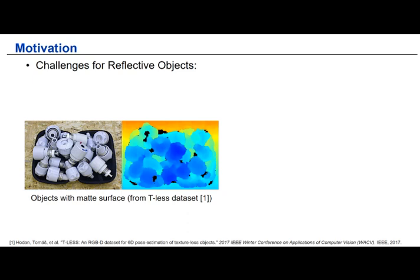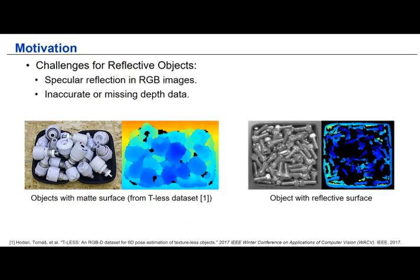Generally, for objects with non-shiny surfaces, a consumer-level depth camera can provide dense, high-quality depth data. Here we show an example of the RGB image and the depth map from the TLS dataset. However, when objects have highly reflective surfaces, there will be large missing depth measurements, making object pose estimation difficult. Moreover, because of specular reflection, thick edges introduced in the RGB images make object pose estimation even more challenging.